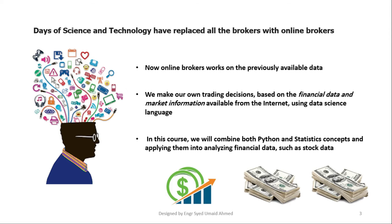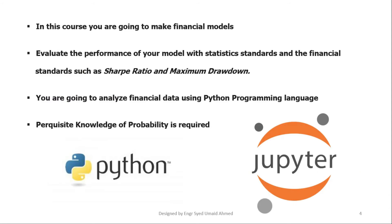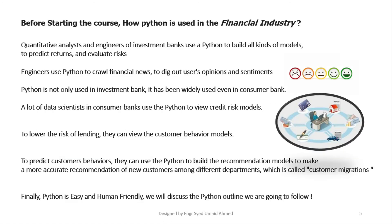Now the job of online broker is upon you. We are going to make financial models. We are going to know about the financial standards of any model. We will evaluate the performance of the model using statistical standards. We will talk about Sharpe ratio. We will talk about maximum drawdown. You are going to analyze real stock markets and real financial data using Python programming. You just need to know a little about probability. In this course we will use the Jupyter Notebook as a platform, and we have labs available with full practical demonstrations.